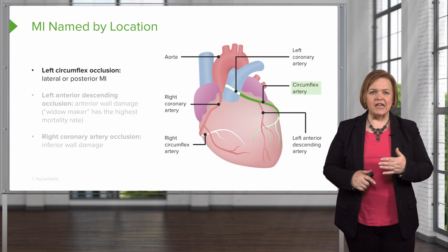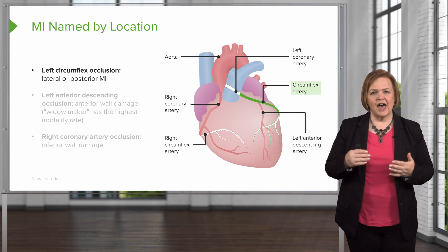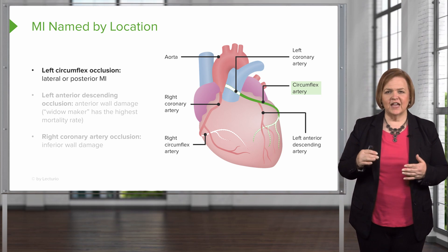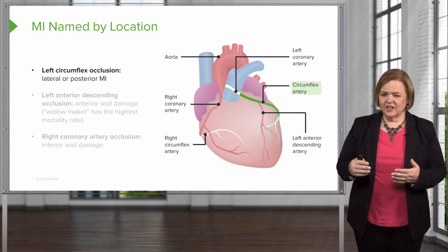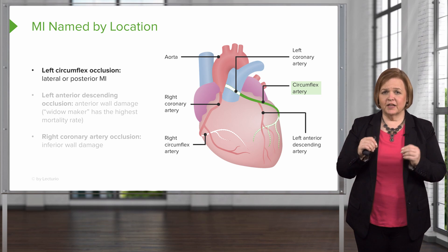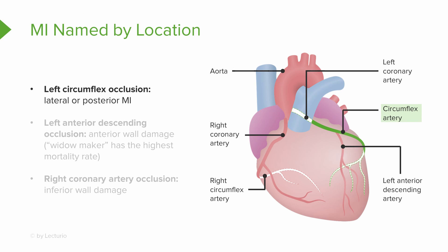Now let's talk about how we name MIs — this is why it's so important to understand how the blood supply works. This is a textbook heart, so not every patient's blood supply looks exactly like this, but it's the general idea. Take a look at the graphic and orient yourself: you can see the aorta, how the vessels go out to the body, the atria on top, and the ventricles on the bottom.